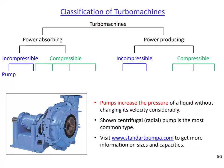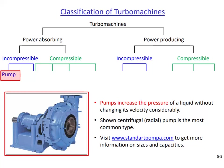Turbo machines can be classified in many different ways. Here you see a classification based on whether they absorb or produce power, and further whether the working fluid is incompressible or compressible. On the far left we see the pump — pumps are used to pressurize liquids such as water, oil, or blood. The one shown here is a centrifugal pump, which will be studied in detail in this chapter.